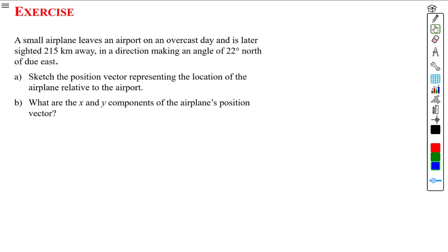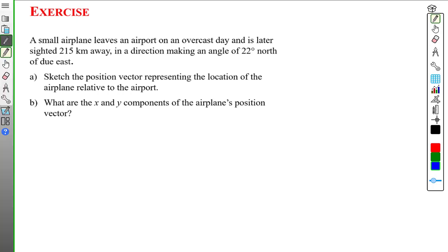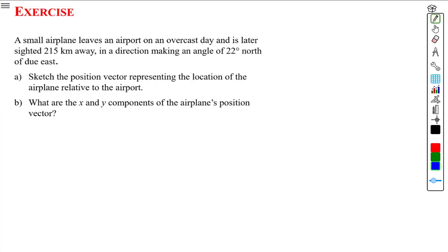There's a bit of information here — they're giving us the position of the airplane relative to an airport, so let's go ahead and represent that position with the vector r. We will say that r vector is equal to some distance away from the airport at some angle. So r vector equals r at 22 degrees. The magnitude of r is 215 kilometers and the direction is 22 degrees north of due east.